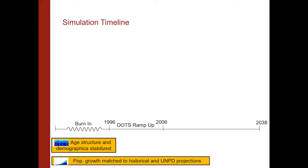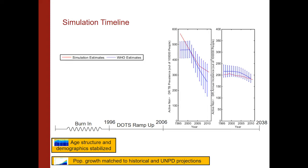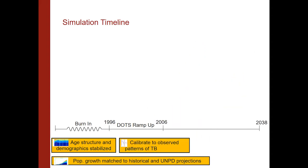Over time, we had the federal treatment program ramp up, with more and more patients gaining access to tuberculosis treatment. The simulation estimates are very similar to those given by the WHO for both prevalence and incidence of tuberculosis over this period, giving us confidence that the simulation is performing accurately. We also had second-line therapy ramp up over the appropriate period, so we can now do projections about the future to inform how the TB prevalence and epidemic will behave.